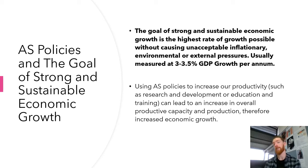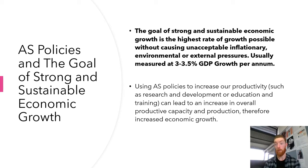The goal of strong sustainable economic growth is the highest rate of growth possible without causing unacceptable inflationary, environmental, or external pressures — usually measured at 3 to 3.5 percent of GDP growth per annum. Aggregate supply-side policies aim to increase our productivity. Things like research and development or education and training try to make us more productive, getting more output per unit of input, which can lead to increased productive capacity and production, therefore increasing economic growth. If AS policies are effective, there will be higher rates of economic growth.